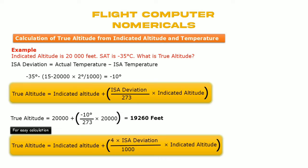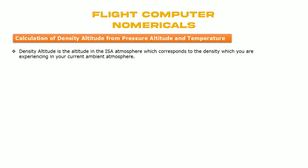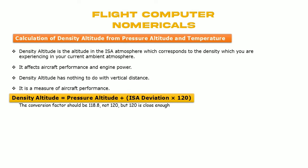For easy calculation, remember the formula displayed on screen. Calculation of density altitude: density altitude is the altitude in the ISA atmosphere which corresponds to the density you are experiencing in your current ambient atmosphere. It affects aircraft performance and engine power. Density altitude has nothing to do with vertical distance — it is a measure of aircraft performance. The formula is: density altitude = pressure altitude + (ISA deviation × 120).